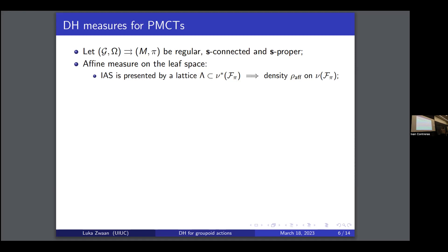From this lattice, you get a density on the normal bundle: take any basis of the lattice and wedge them all together, which gives a well-defined density. From this density on the normal bundle, you get a measure on the leaf space. There is a nice paper by Crainic-Mestre called 'Measures on Differentiable Stacks', where they developed the whole framework of transverse measures on groupoids. This fits into that framework very nicely, because we're dealing with proper regular groupoids where the situation becomes particularly clean.